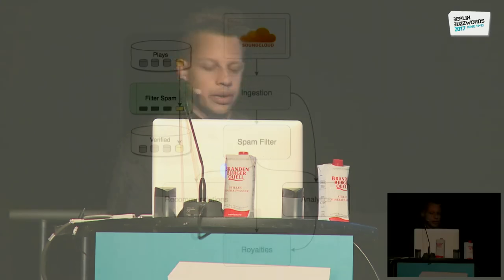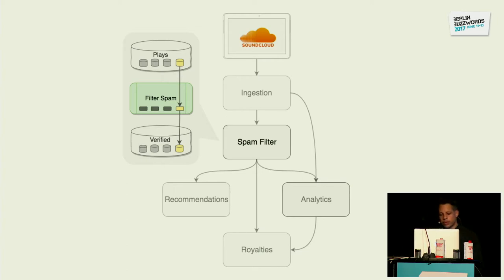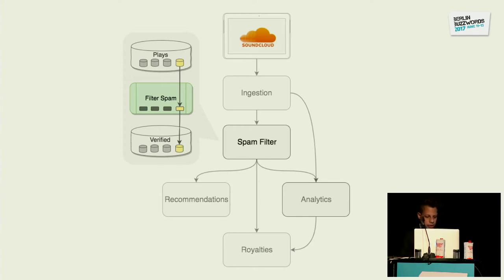A single ETL is pretty straightforward: it has a source, some kind of computation or job, and then a destination. The source and destination are storage systems — one could be a database and one could be HDFS. The ETL executes with some regularity: in a streaming world, when a batch reaches a certain size; in a batch world, based on some schedule. But each ETL represents not only computation but effectively a domain model. When we filter spam plays, we express a model which attempts to capture what is and is not spam, producing a new representation of the input set augmented with this internal logic.